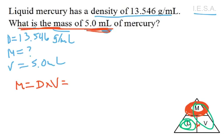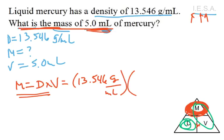So we have just done I, we wrote down our information, and then we did E, we got our equation, and now we're going to do S, we're going to substitute in, so the density is 13.546 grams over milliliters, and the volume is 5.0 milliliters. Now milliliters are on the top, milliliters on the bottom, they're going to cancel out. We're left with grams. Grams is a mass, so we are definitely on the right track.